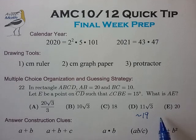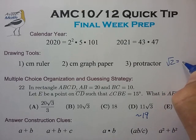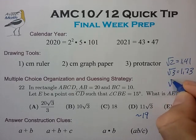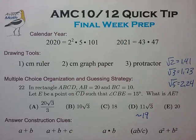You want to remember a few common radical values to help estimate numerical values in the answer choices. Try to remember that root 2 is 1.41, root 3 is 1.73, and root 5 is 2.24. These three values are the most common in the AMC answer choices.